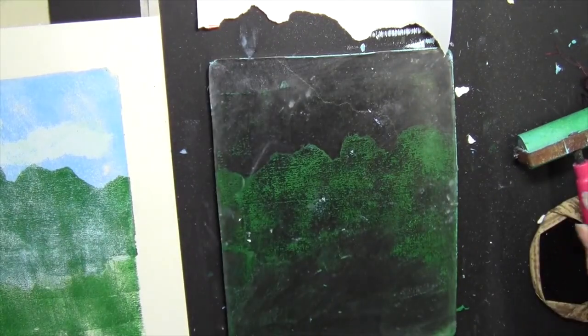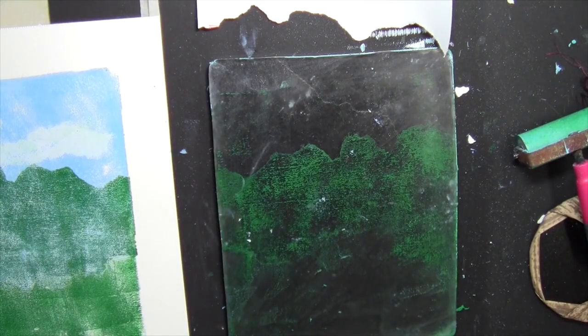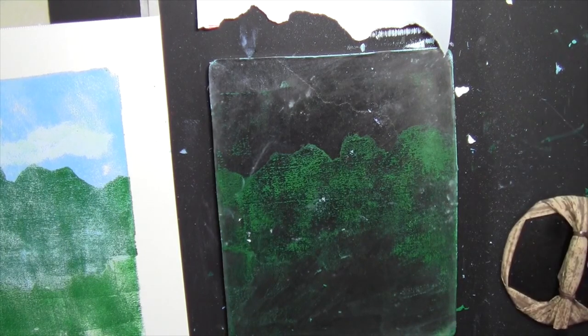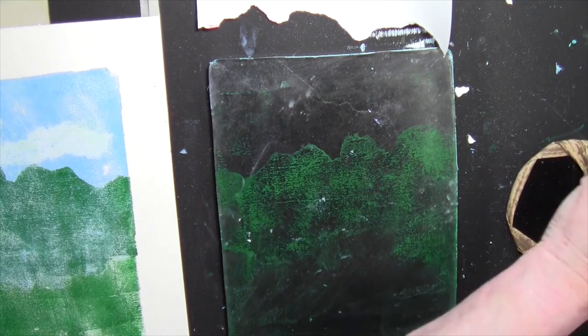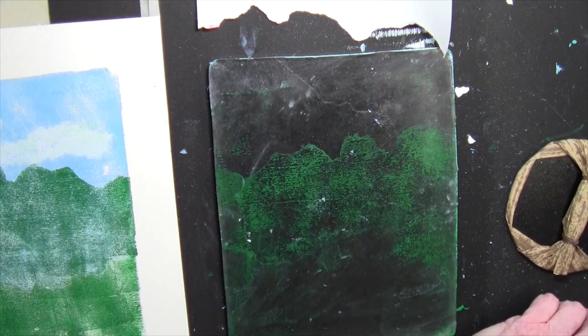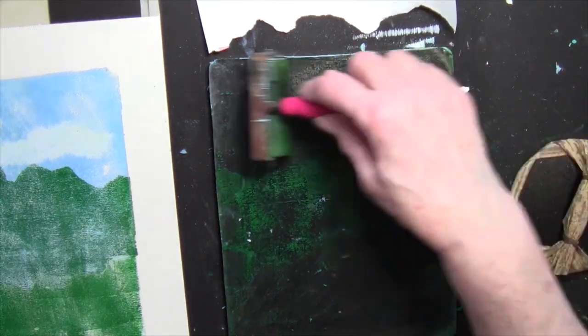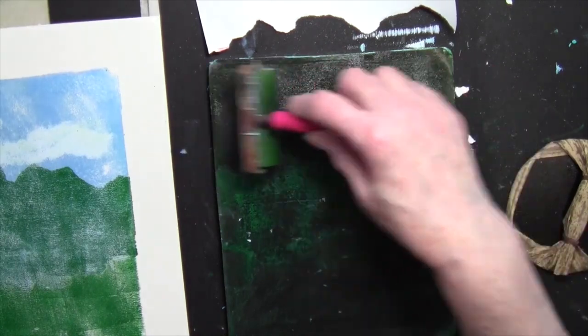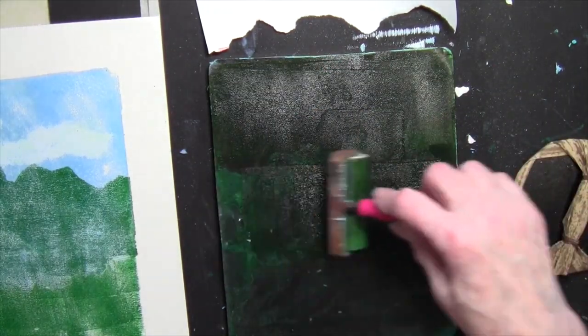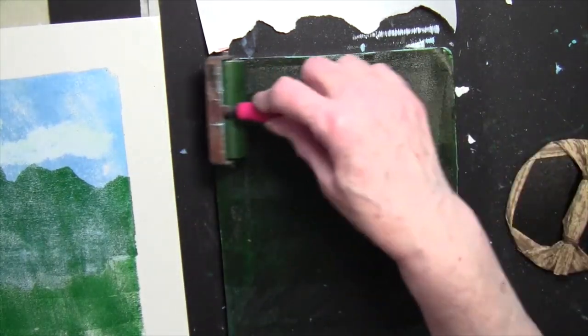So for this layer, we're using sap green and it's in addition to being mixed with the open gel. It also has just a little bit of quinacridone nickel azo gold in it. I wanted this one to be darker and a little earthier because the sun's not shining on it. And when the sun shines on stuff, it looks brighter. So I wanted that top mountain range to look brighter than this one.